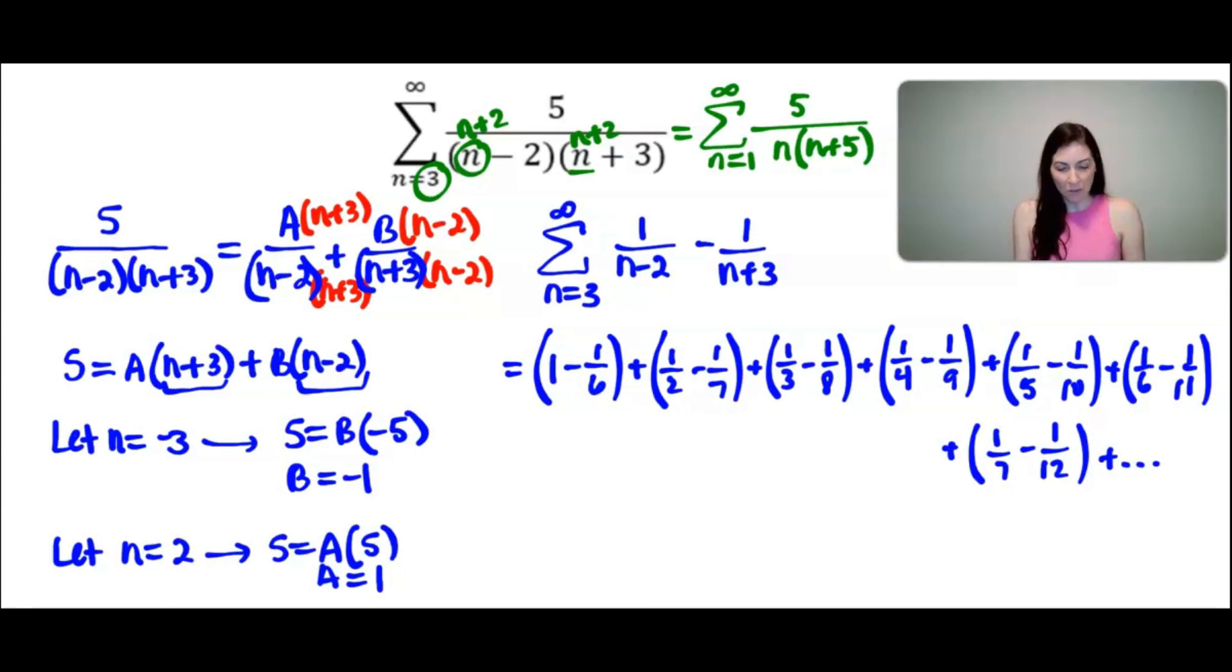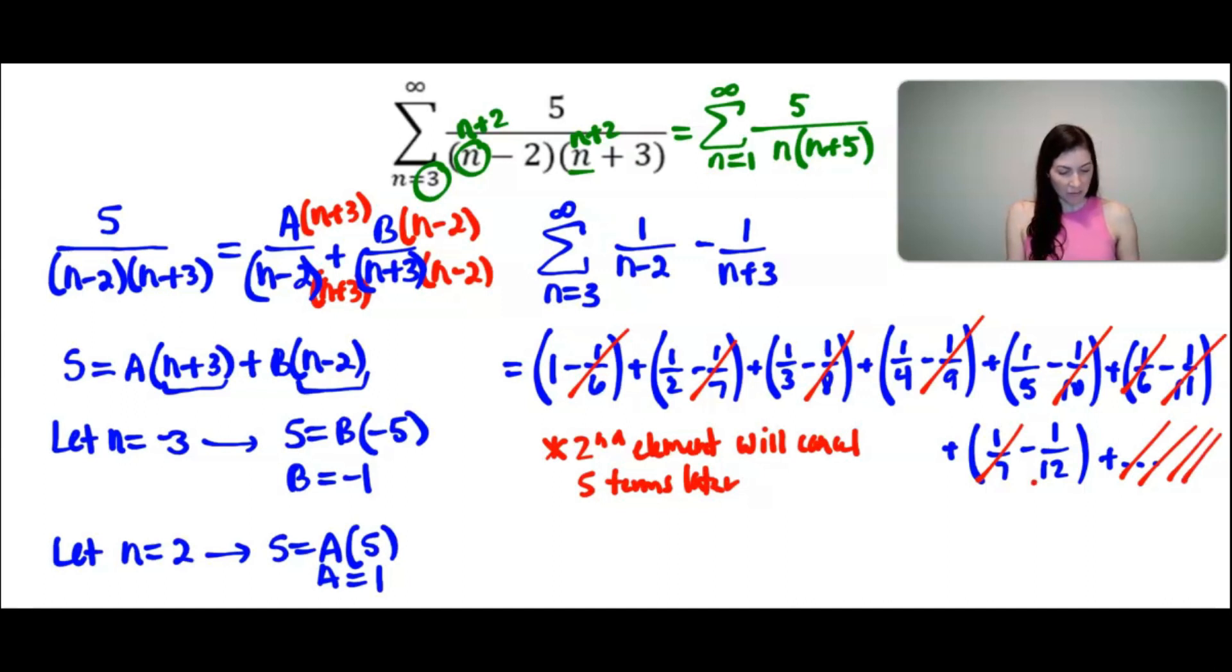I finally can see where the telescoping is happening. So in the first term, I had a minus 1/6. And then that positive 1/6 showed up right here. So 5 terms later. So what will happen is the second element, meaning in this case, like that negative 1/6 or the negative 1/7, will cancel 5 terms later. So similarly, this negative 1/7 will cancel 1, 2, 3, 4, 5 terms later. And that'll keep happening. So this negative 1/8 will cancel 5 terms later. This negative 1/9 will cancel 5 terms later. This negative 1/10 will cancel 5 terms later. Same with the negative 1/11 and same with the negative 1/12. And that'll keep happening.